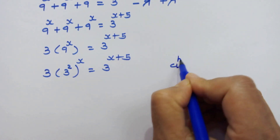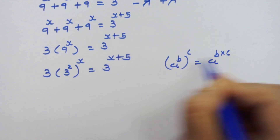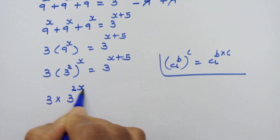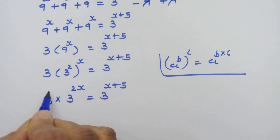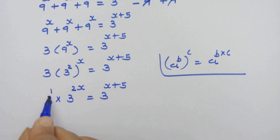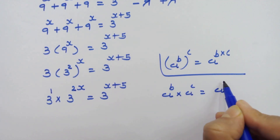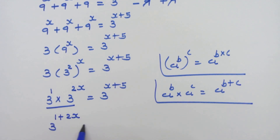Now if we have a raised to b, whole raised to c, then we can write it as a raised to b into c. Using this rule, we can write 3 into 3 raised to 2x is equal to 3 raised to x plus 5. Since 1 is the default power, we write 3 as 3 raised to 1. Then using the rule a raised to b into a raised to c equals a raised to b plus c, we get 3 raised to 1 plus 2x is equal to 3 raised to x plus 5.